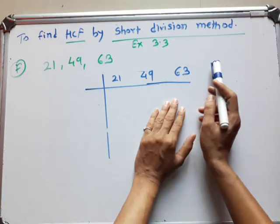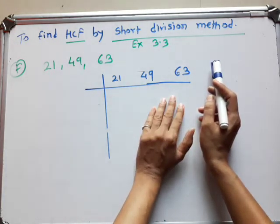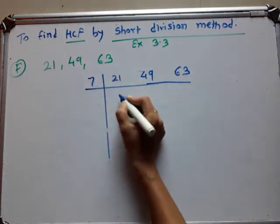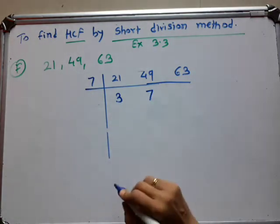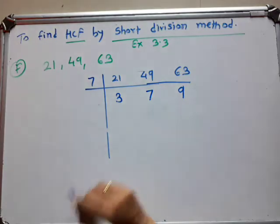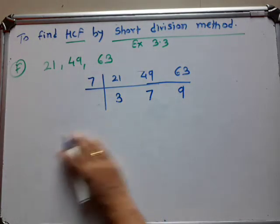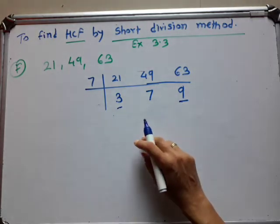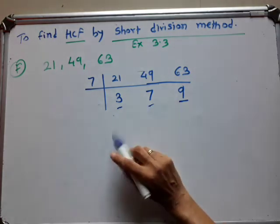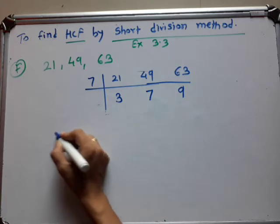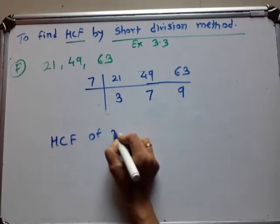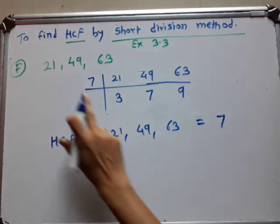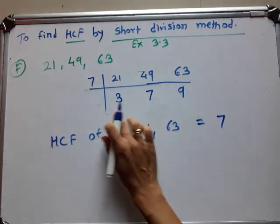Then next prime number is 5 — all the numbers are not divided by 5. Then next prime number is 7. Yes, all numbers come in the table of 7. See here: 7 times 3 are 21, 7 times 7 are 49, and 7 times 9 are 63. So here we get the answers 3, 7, and 9. Now 3 and 9 come in the table of 3, but 7 will not come in the table of 3. So you have to stop here. So the SCF of 21, 49, and 63 is equal to only 7. We get here only one common number — these others are not common numbers. You have to stop here.